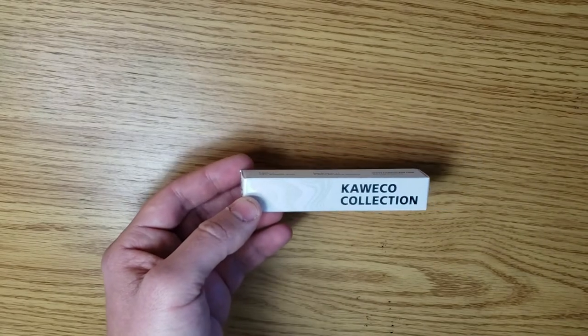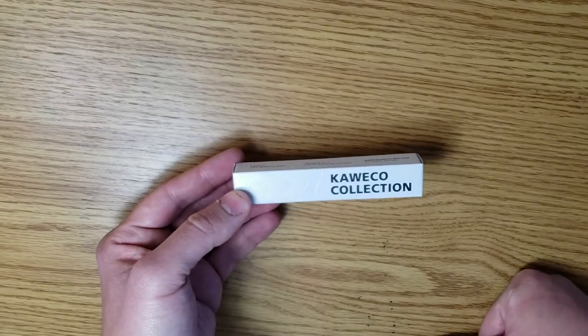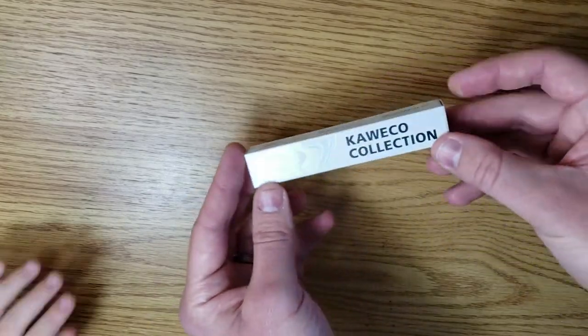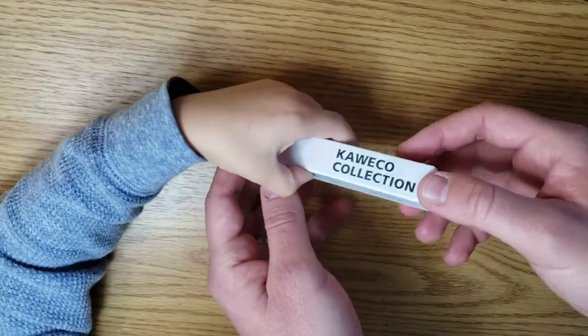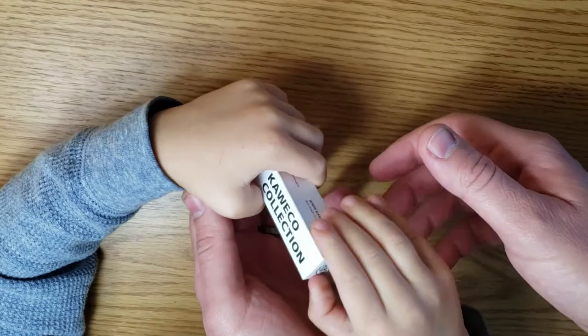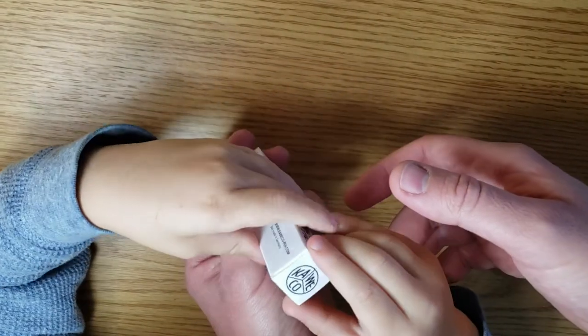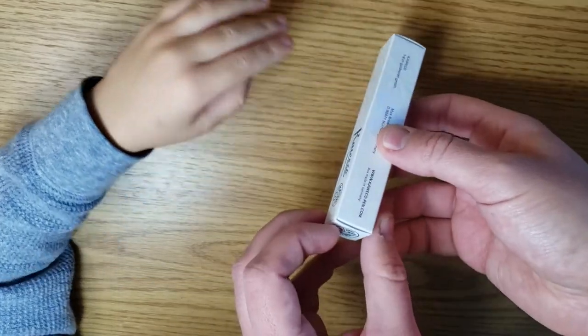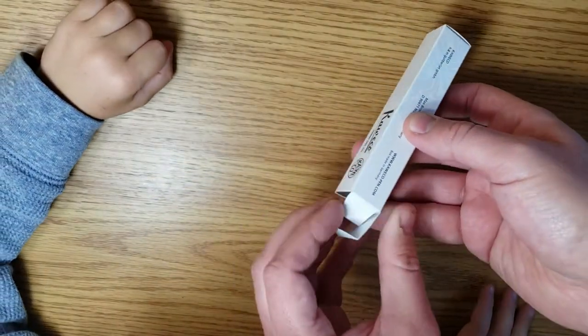So this is fun because this Kaweco Sport comes in kind of a pearlescent box. Oh you want to pop the bubbles? How about we pop those after the video? Okay. So it's just a simple small box. Of course it's not really that important but it's a fun touch that they made the box match the iridescent pearl pen. Okay, let's take this out and see what this new Kaweco Sport looks like.